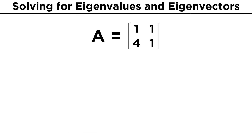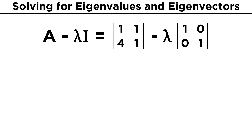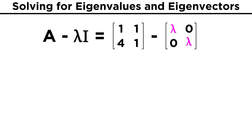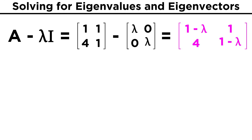Let's try a concrete example so that this will make more sense. Consider matrix A which equals [1, 1; 4, 1]. We will take this matrix and subtract lambda I, where I is the two by two matrix with ones on the main diagonal and zeros for the other two entries. Multiplying by lambda, we simply end up with lambdas on the main diagonal, and so performing the subtraction, we will simply end up subtracting lambda from the main diagonal of A. That gives us [1 minus lambda, 1; 4, 1 minus lambda].